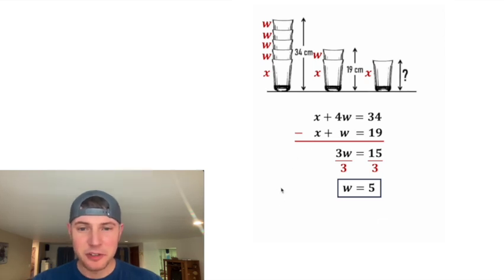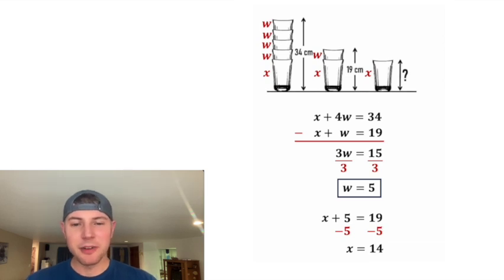Next, let's take this X plus W equals 19 and copy it down here. And since we know that W equals 5, I want to plug in 5 for that W. And after we subtract 5 from both sides, on the left-hand side, we have X. And on the right-hand side, we have 14.